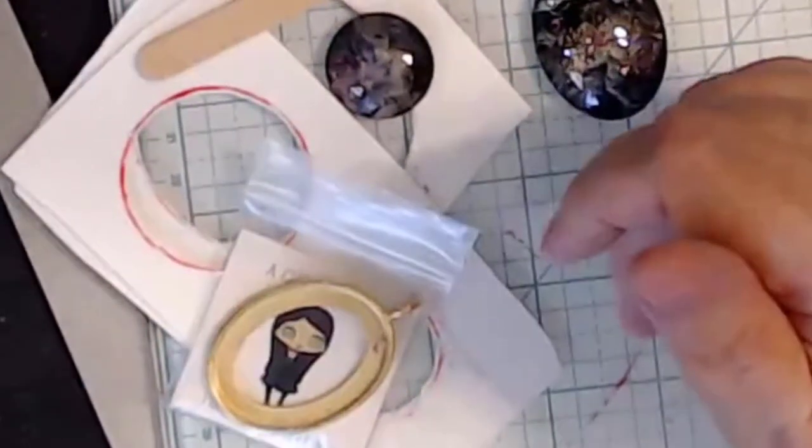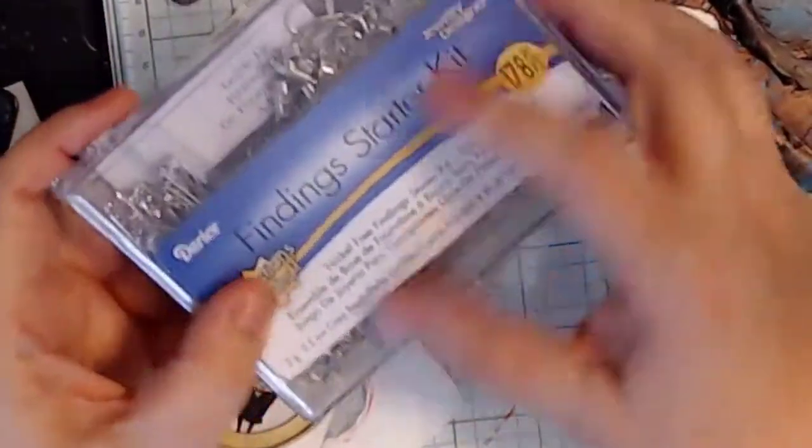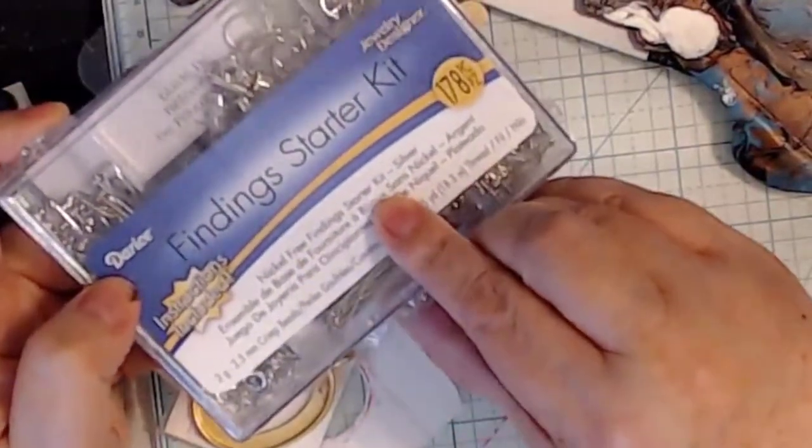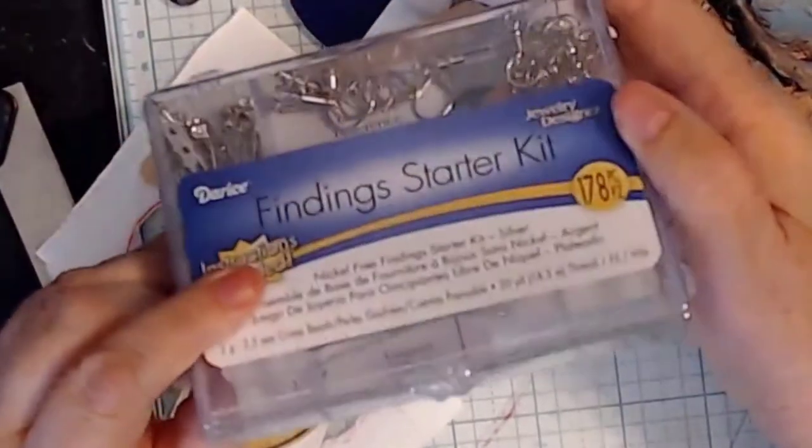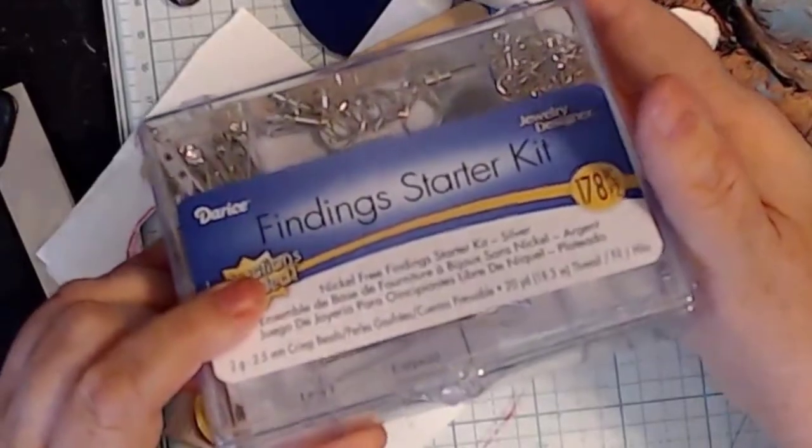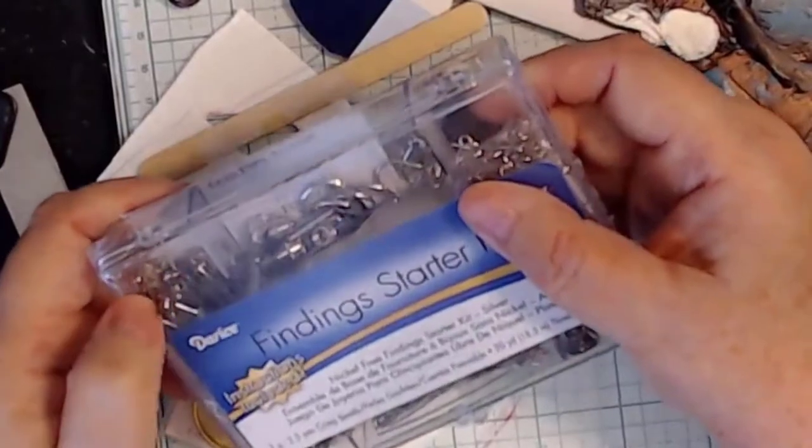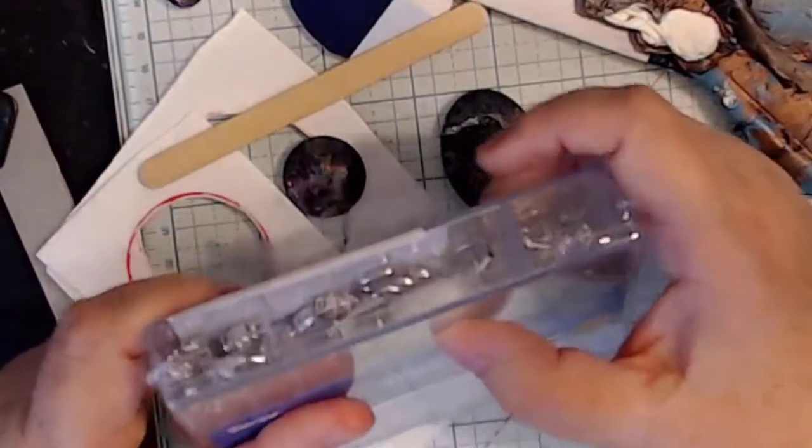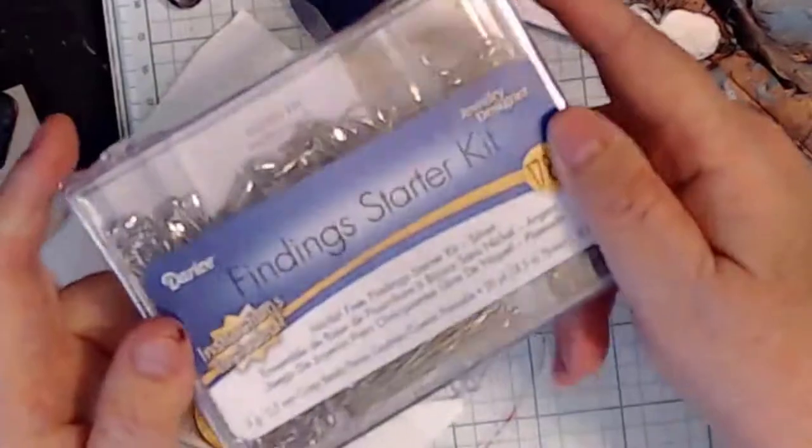I also buy, for example this is a finding starter kit, this is from Darcy it says it is nickel free and it's in the color of silver. There's a bunch of earring wires and so forth in there, some head pins and some bar clips for brooches and things like that and even some magnetic clasps, a few other types of findings in there.